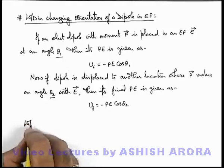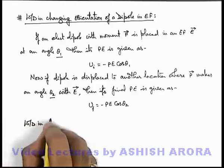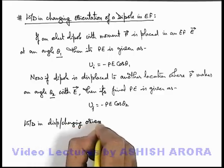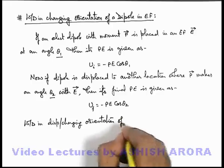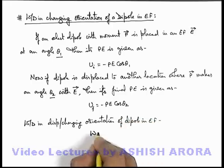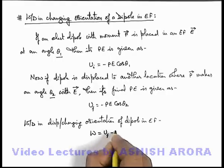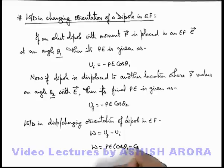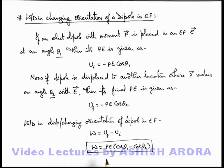Now we can write: in the conservative field, the work done in displacing or changing the orientation of a dipole in an electric field is given as — external work can always be written as final energy minus initial energy. So substituting the values, it will be p·E times (cos(theta 1) minus cos(theta 2)). This is the expression we use for calculation of work done in changing the orientation of an electric dipole when placed in a uniform electric field E.